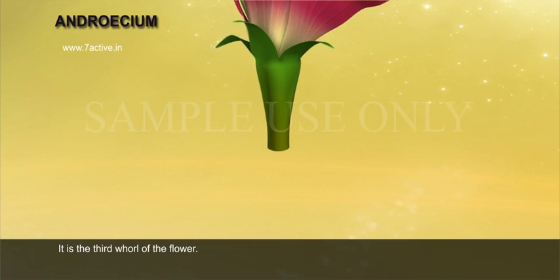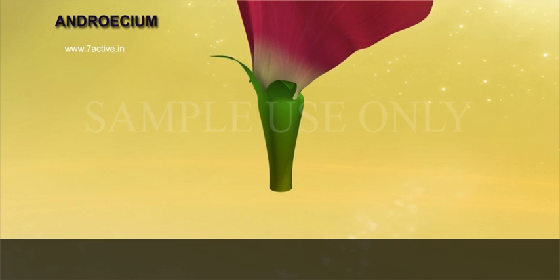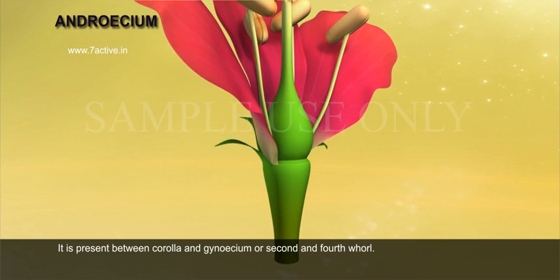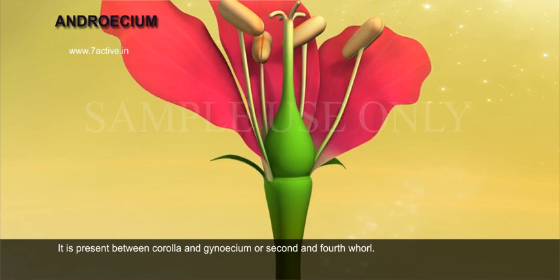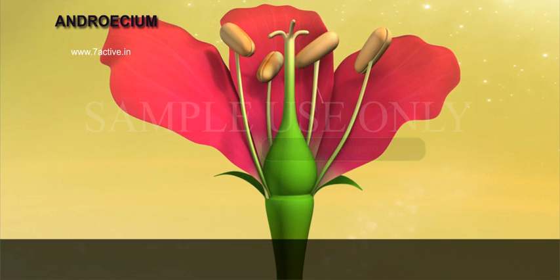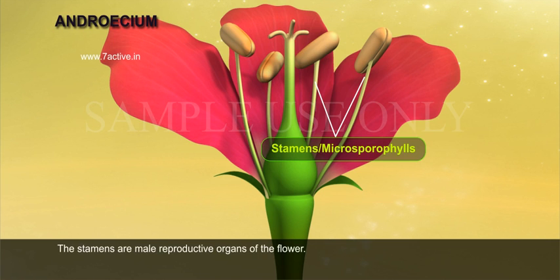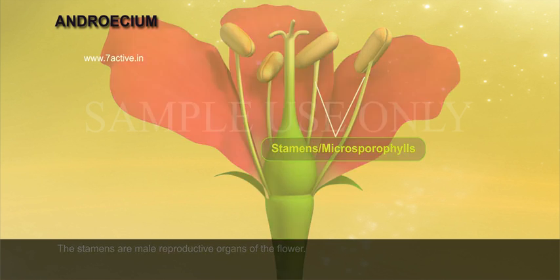Andricium is the third whorl of the flower. It is present between the corolla and gynoecium, i.e., between the second and fourth whorl. It is one of the essential organs of the flower and consists of stamens or microsporophylls. The stamens are the male reproductive organs of the flower.